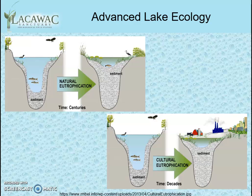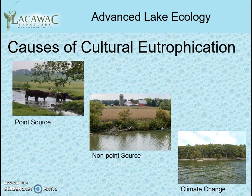Cultural eutrophication is the speeding up of the process caused by human input. Notice how natural eutrophication takes long periods of time, while cultural eutrophication happens much more quickly. Causes of cultural eutrophication are sources that enhance the flow of phosphate, nitrate, and sediments into the lake. Point sources are clearly identifiable sources such as wastewater flow and industrial outflows, while non-point sources are much more ambiguous but just as important contributing sources, such as agricultural activities and fertilizers.